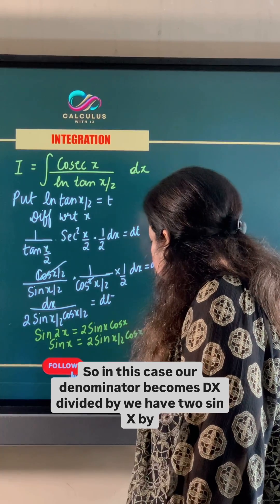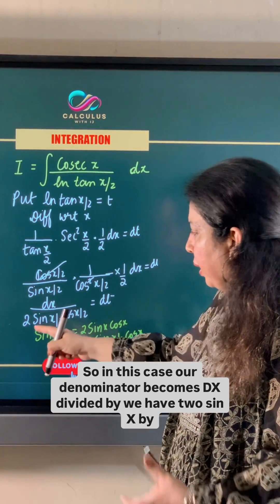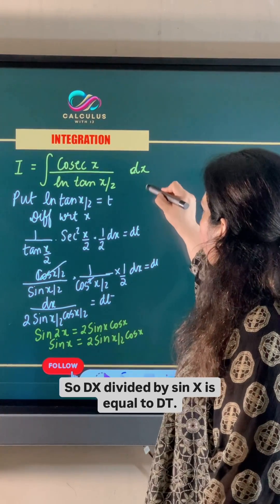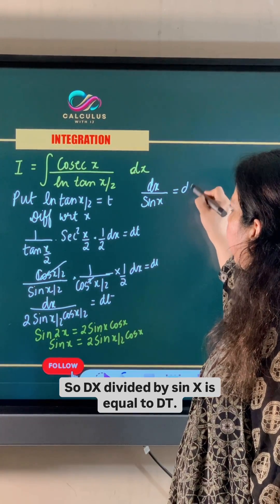So in this case, our denominator becomes dx divided by 2 sin x by 2 cos x by 2 which is the value of sin x. So dx divided by sin x is equal to dt.